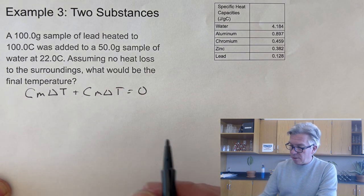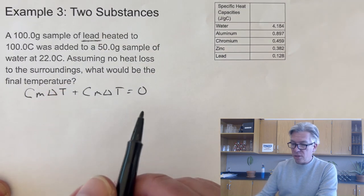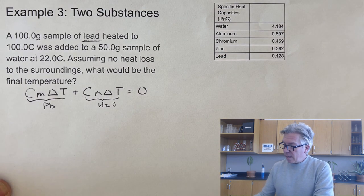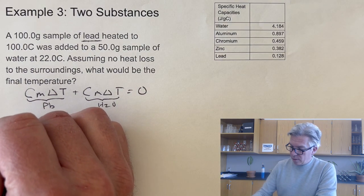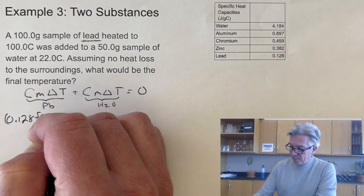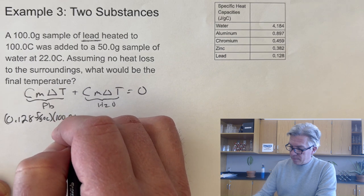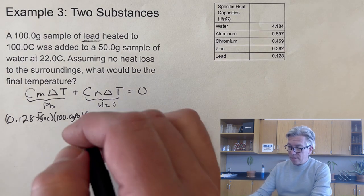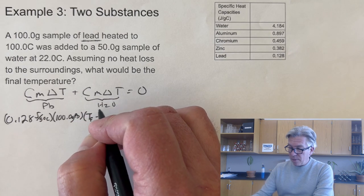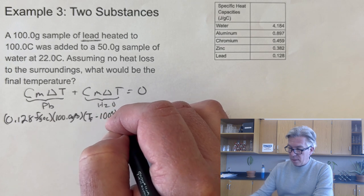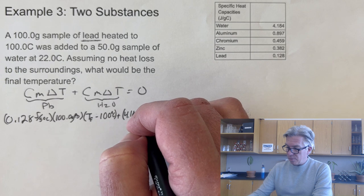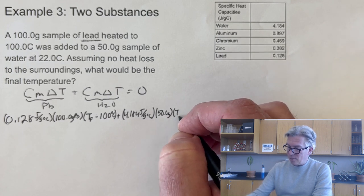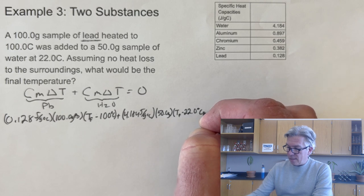This time they tell me it's lead. I know the heat capacity of lead, which is 0.128. The mass of the lead was 100. And the temperature change of lead, this is the difficult part: I don't know what the final temperature is. Since I don't know what Tf is, I'm just going to put in Tf. But I do know it started at 100. Then the water side: 4.184 joules per gram degree, mass of water is 50, and again I don't know the temperature change, so I have to put in Tf and the 22 degrees Celsius and set that equal to 0.